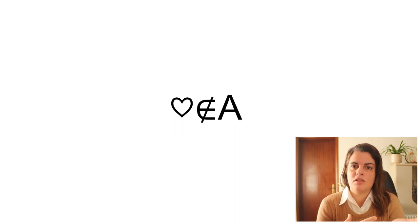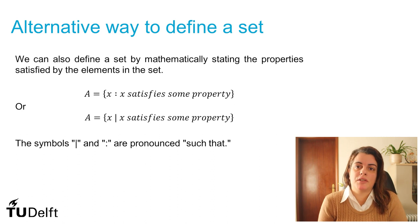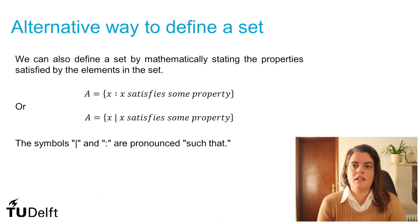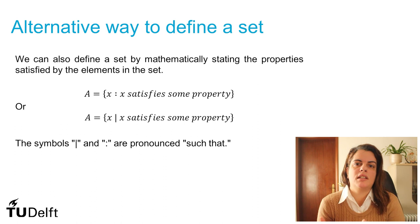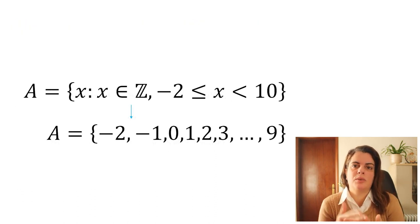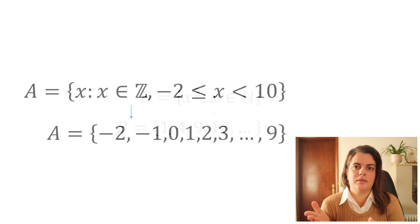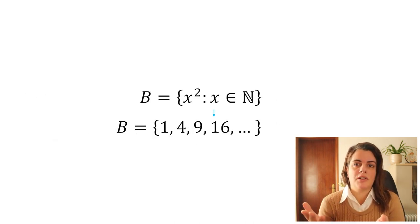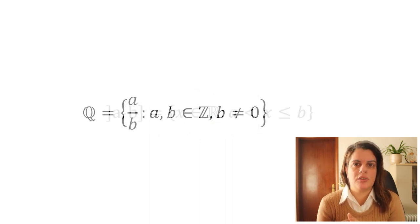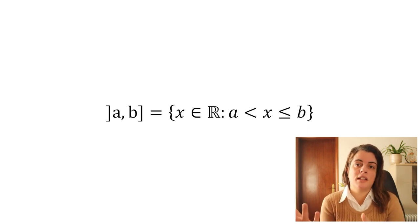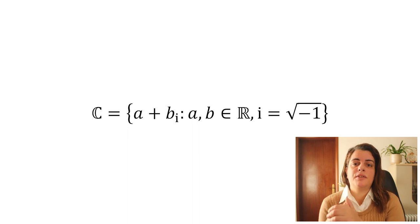We can use the following terminology to say that diamond belongs to A, and we can say that heart does not belong to A. We often work with sets of numbers, and in those cases there is an alternative way to define a set — we can state the property satisfied by the elements. So A is all x such that x satisfies a given property. Examples include the set of all integers between -2 and 10 exclusive, the set of all square natural numbers, the set of rational numbers, an interval of real numbers, and the set of complex numbers.